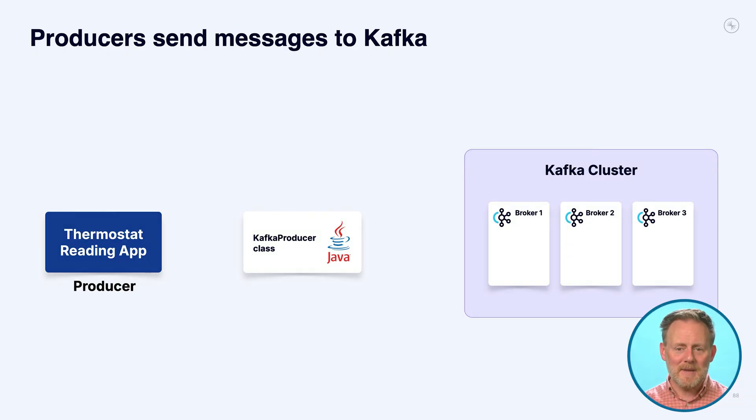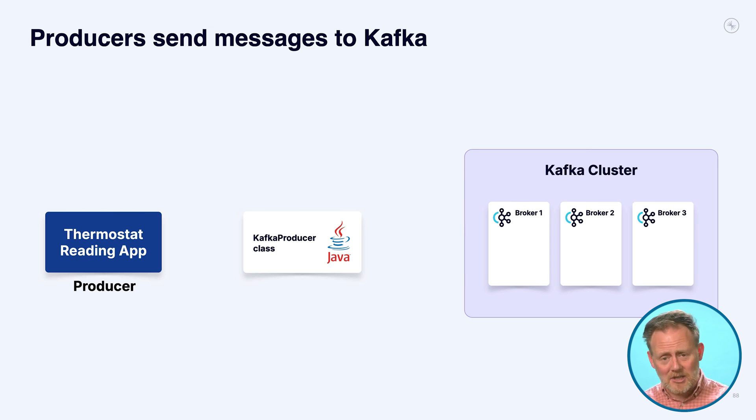The API surface area of the producer library is really pretty simple. I'm going to show you a little bit of Java code. If you're not a Java person, don't worry — there's official support from Confluent for Python, Go, JavaScript, .NET, and community-based drivers for really any language you could think of. Java is the native language of Kafka; features show up in the Java library first, and it's the one I'll be using in this module and the next.